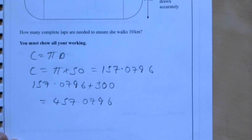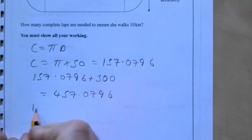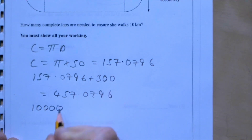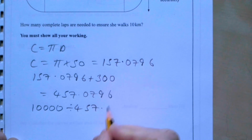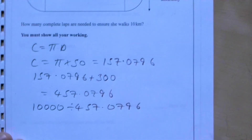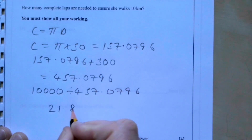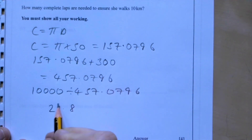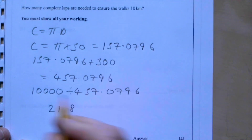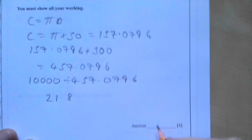We divide 10,000 metres by 457.0796 and get 21.8 laps. Since she needs complete laps, the answer is 22.